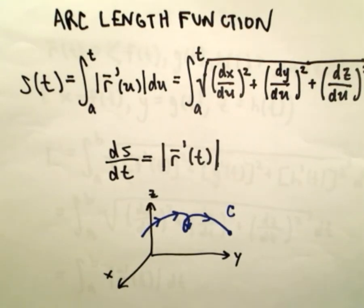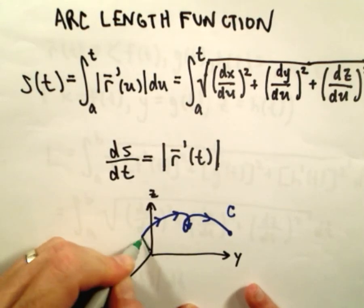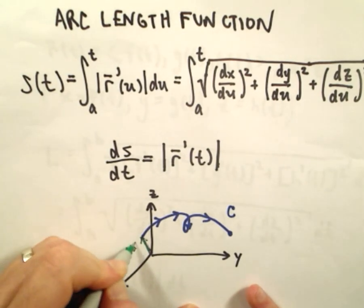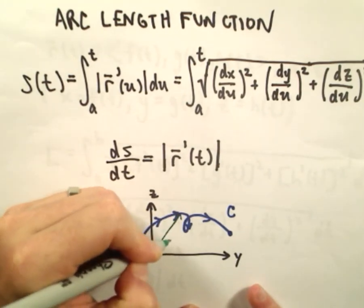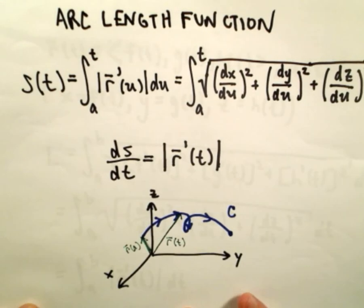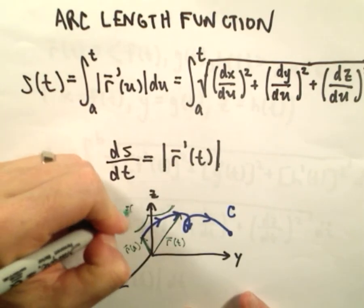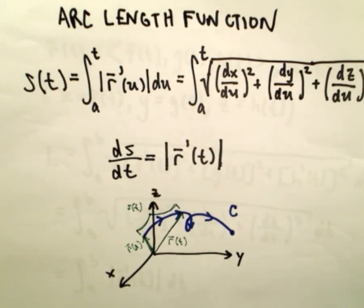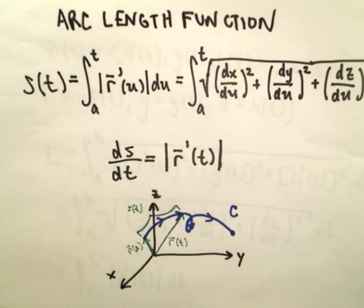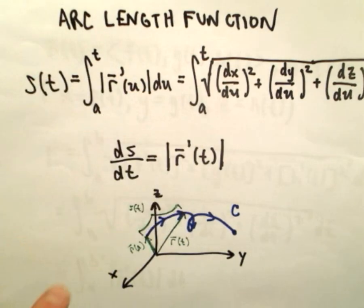All s(t) really does is tell you the distance. If you think about it: if you plug in a you'd have r(a), and r(t) is the vector pointing to the curve at parameter t. So s(t) tells you the length of that section of curve — the length of the curve between r(a) and r(t) that gets traced out.